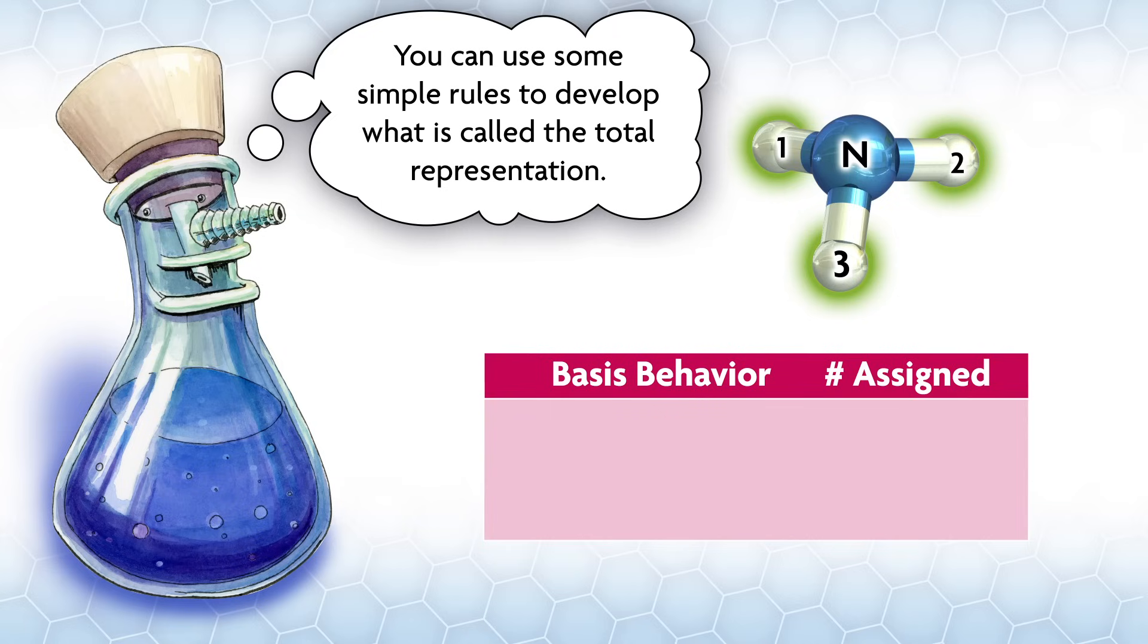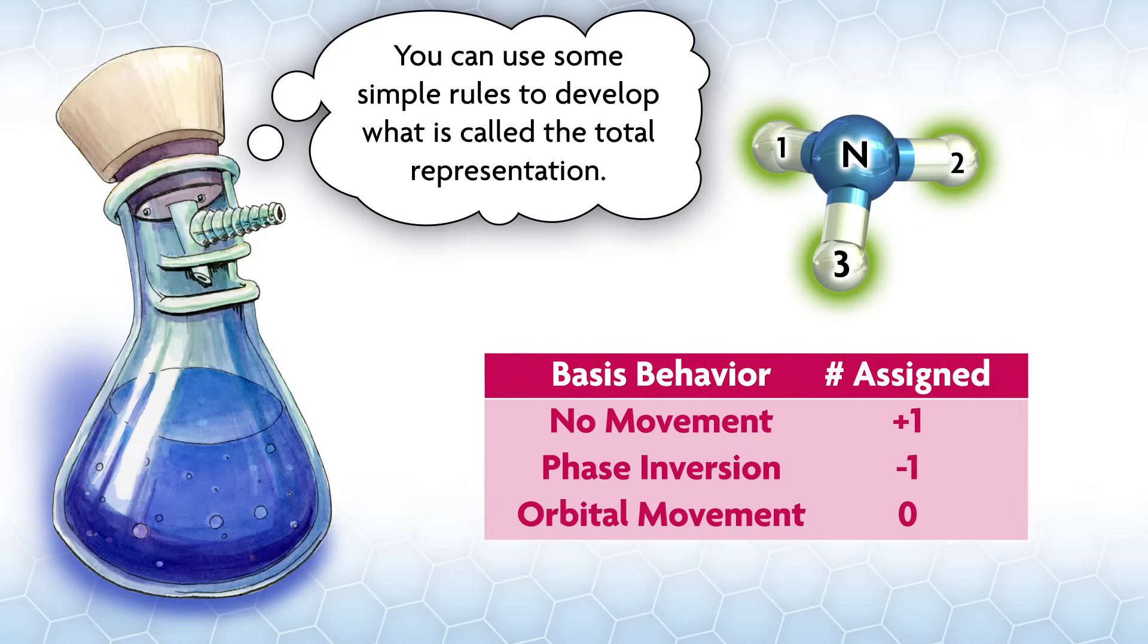This will be the mathematical construct that answers your question regarding the nature of the SALCs. Those simple rules are just this: We will do the symmetry operations on the basis, then we will write down a number for how the basis behaved during the operation. If an orbital on the basis didn't move at all, we will give that a plus 1. If the phase inverts, we will give that a minus 1. If the orbital moves into another part of the basis, for example s orbital 1 moves to s orbital 2's position, we'll give that a zero.